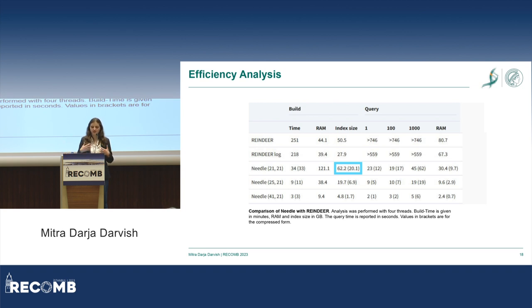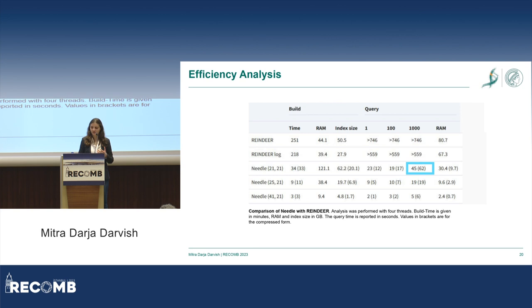In the compressed form, even with k-mers we are already way smaller than the Reindeer index. And we are definitely faster than Reindeer in the build step.